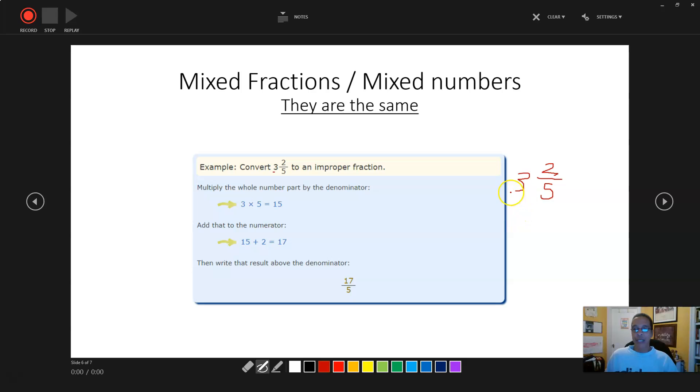Three, whole number, times five. That is fifteen. And what do we do after that? We're going to add two. And that is going to equal seventeen.